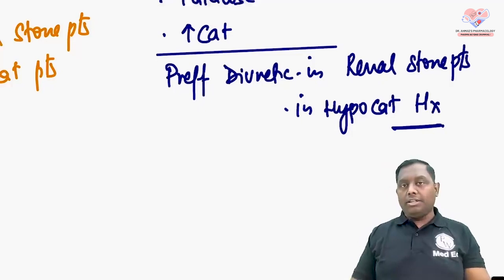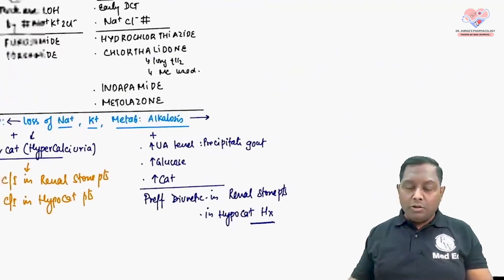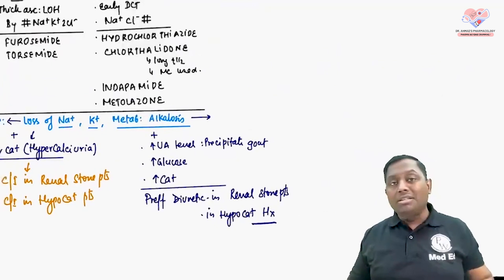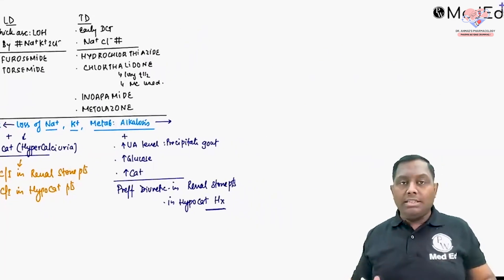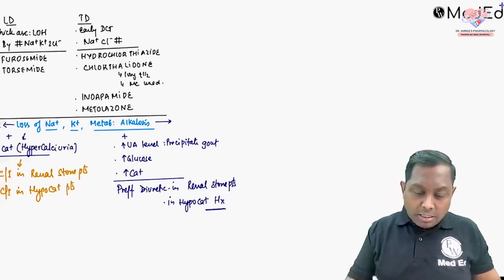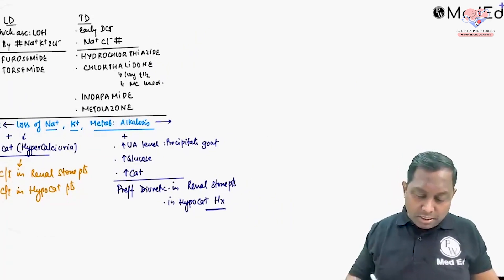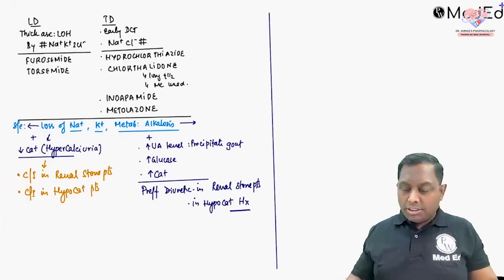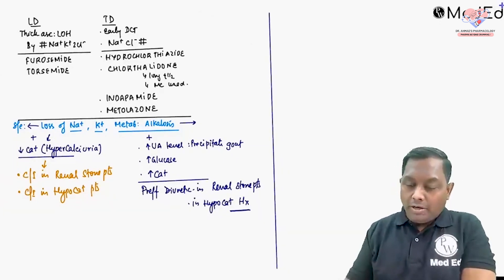However, I am not saying thiazide diuretics should be used for active management of hypocalcemia. Thiazide is a slow-acting, long-acting diuretic. Hypocalcemia is an emergency — in emergencies you need a faster-acting agent like calcium gluconate.